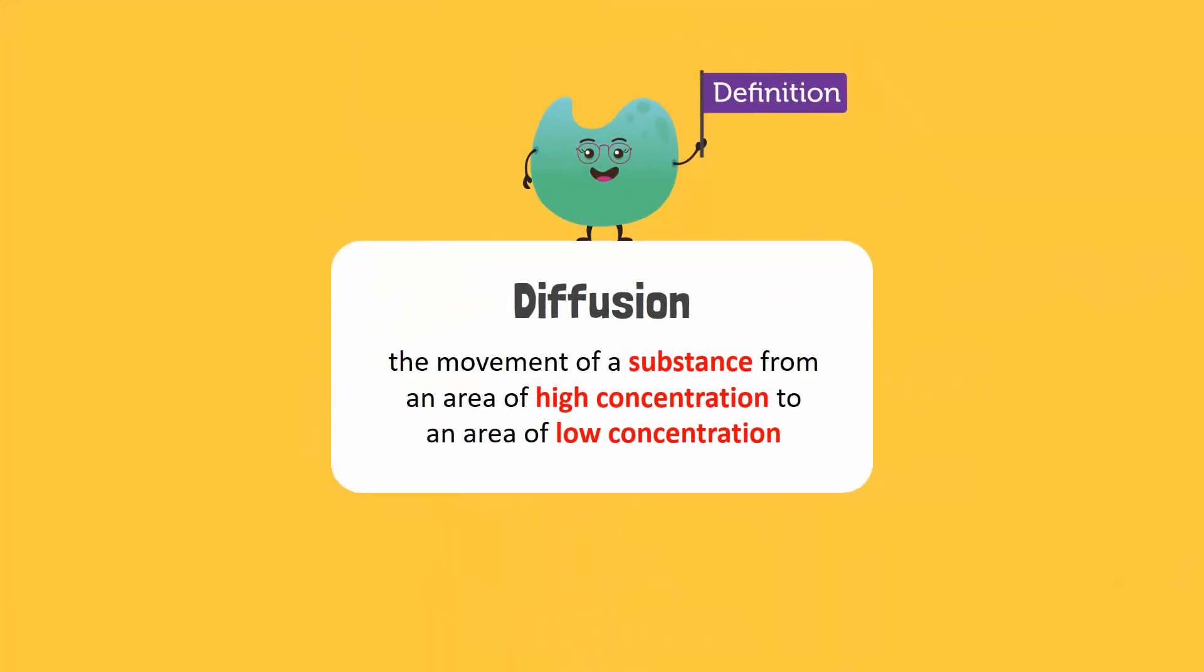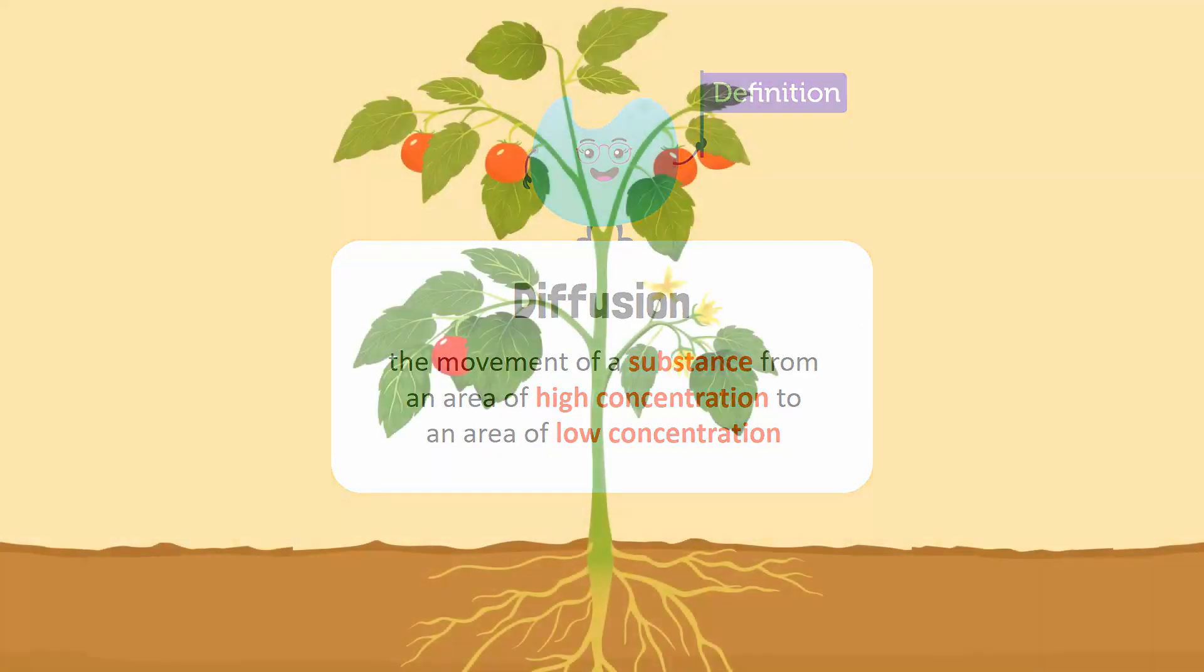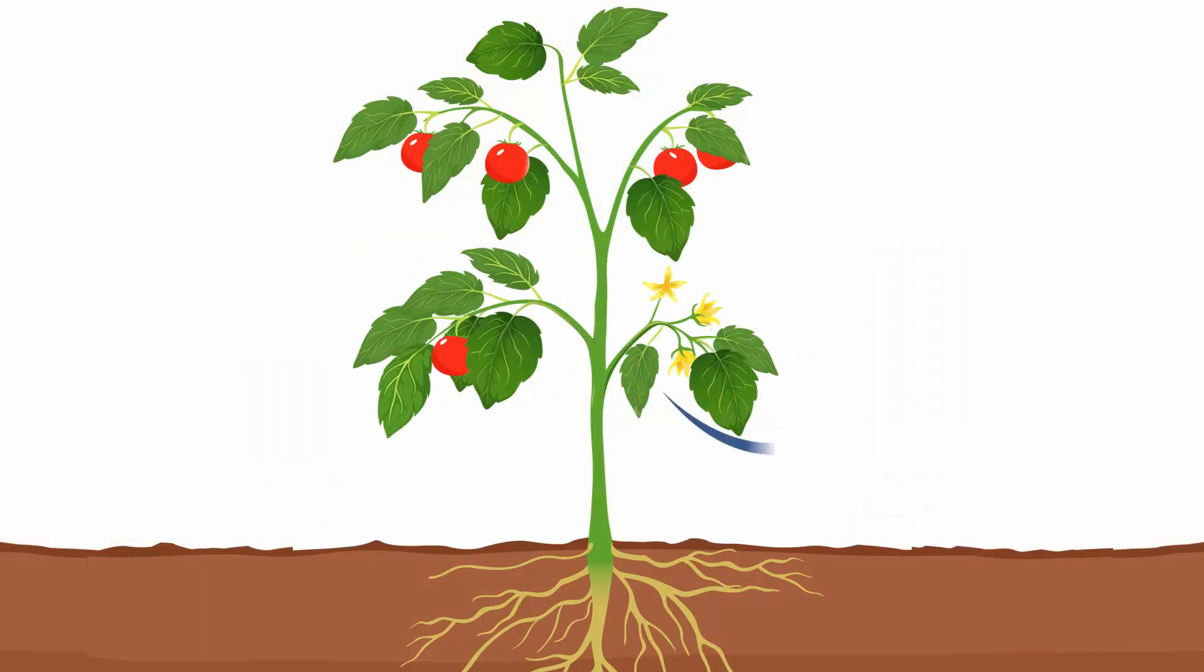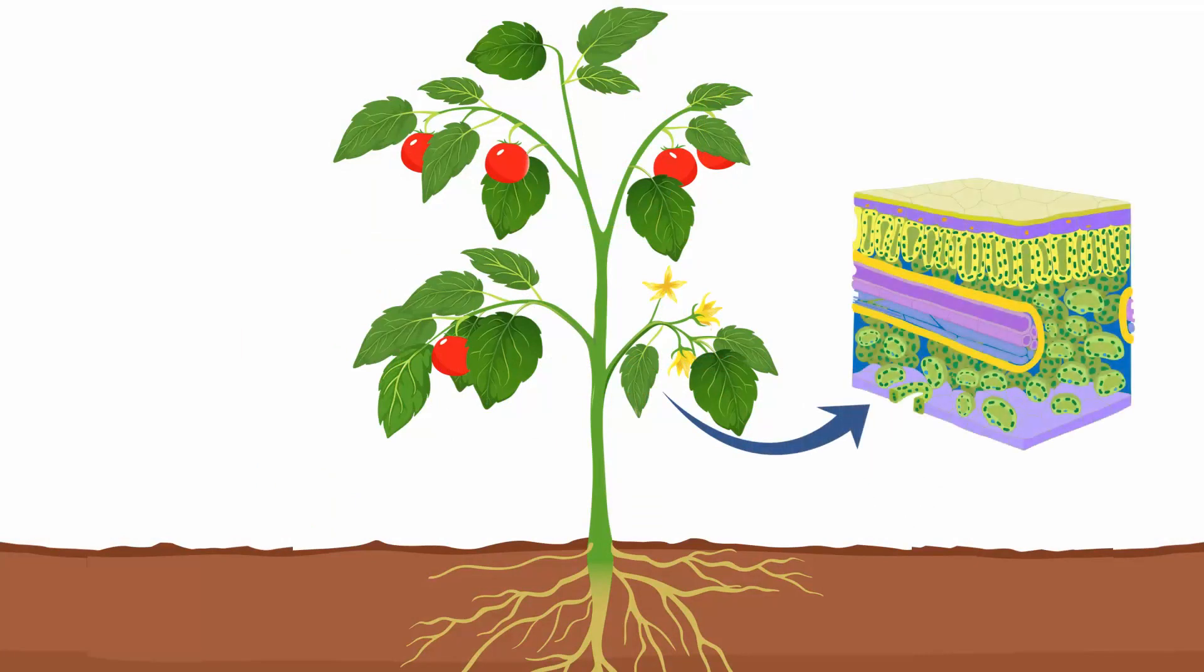The movement of gases in and out of plants takes place by diffusion. Diffusion is the movement of a substance from an area of high concentration to an area of low concentration. Both oxygen and carbon dioxide enter in leaf plants through small openings called stomata. These are found in abundance on the lower surface of leaves.